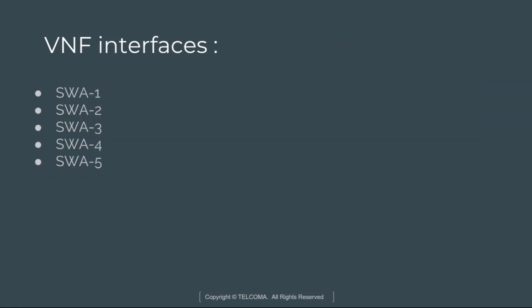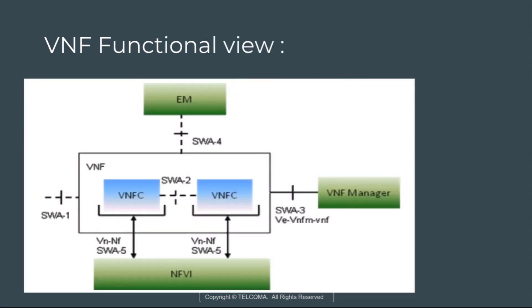Moving to SWA-1: it is an interface for communication between two virtualized network functions, which connects various virtualized network functions in a forwarding graph. It represents data or control plane interface components. SWA-2 is the interface internal to the VNF, for communication between two virtualized network function components.